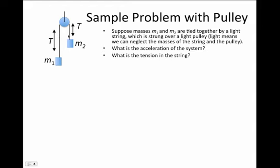In this case, we'll have a somewhat interesting situation where we have to adapt our notion of a coordinate system. We're going to work a problem now where we have two masses, m1 and m2, which are tied together by a light string.